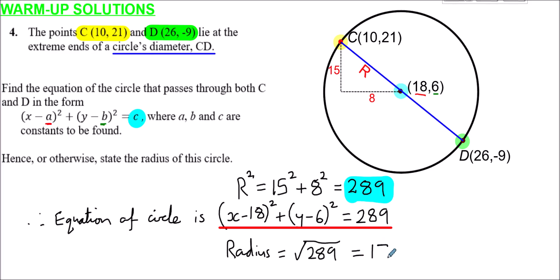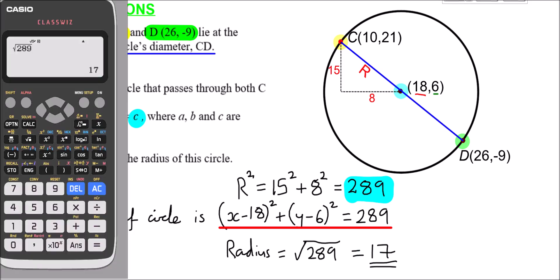If you don't believe me, I can verify: √289 = 17 on the calculator. So 17 is your answer.